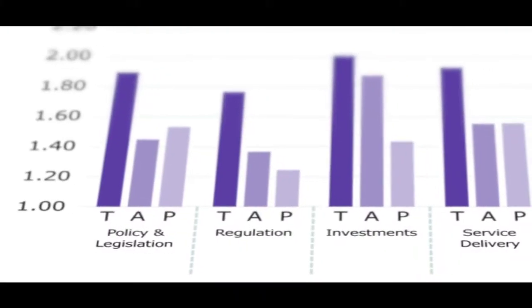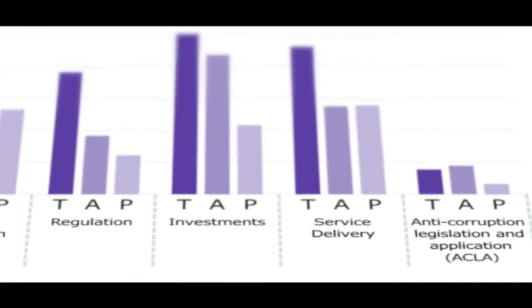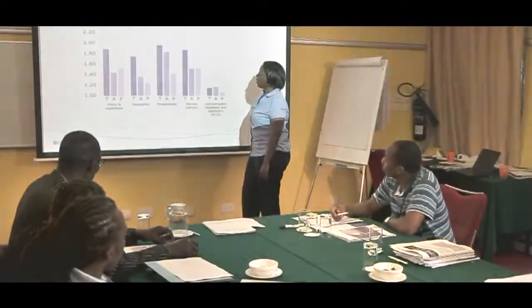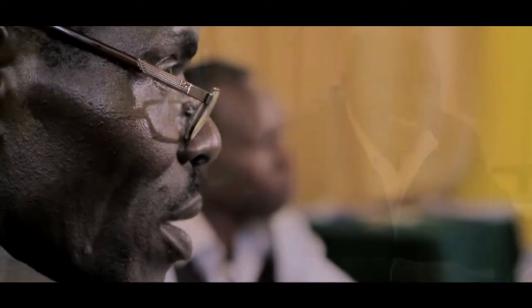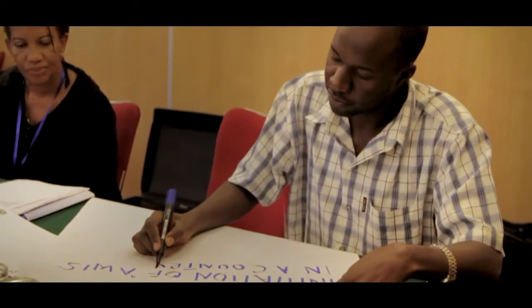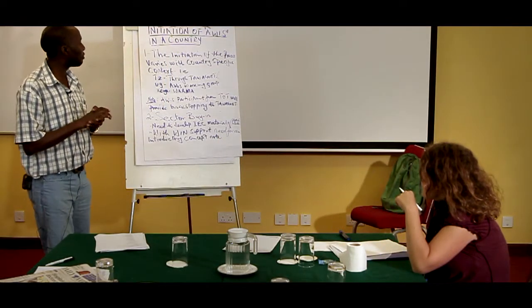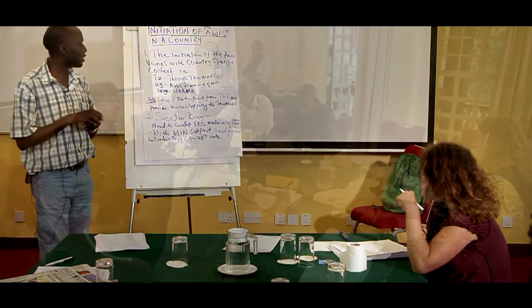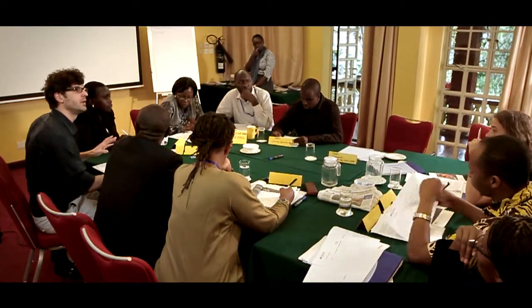The results are then turned into a chart with the average TAP scores for the five risk areas. The group discusses the outcome of the scoring and jointly explains the results. This qualitative information is added as annotations to the scores, which will enhance understanding and allow sharing with others. Participants work together to find arguments to explain the different scores.